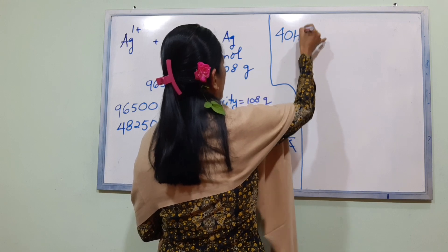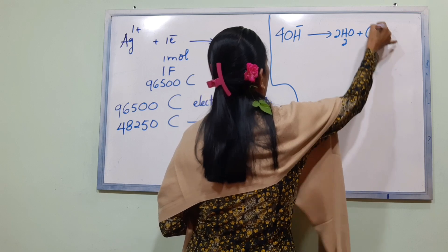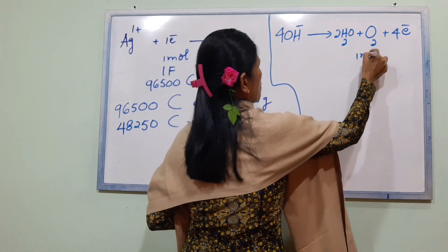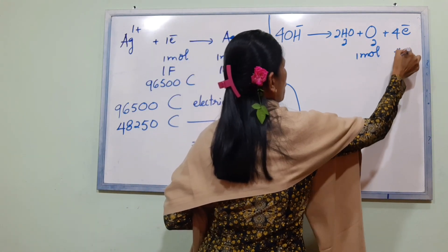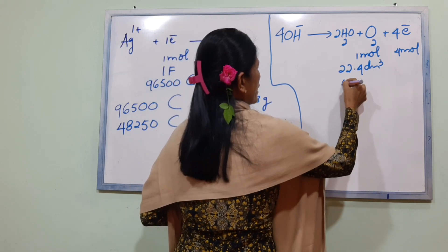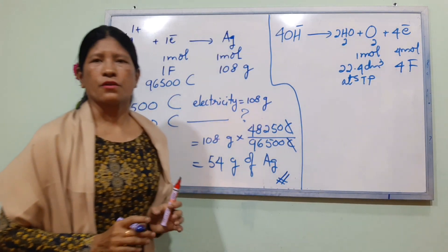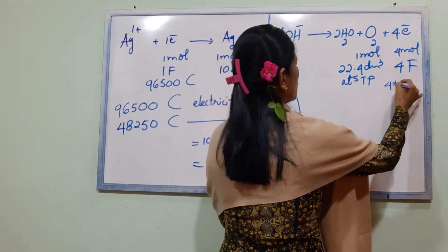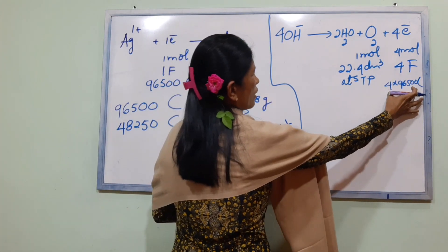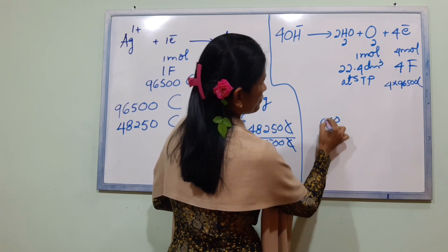For oxygen, the equation is: 4OH⁻ → 2H₂O + O₂ + 4 electrons. O₂ requires 4 electrons, meaning 4 Faradays. At STP, 1 mole of O₂ = 22.4 dm³. So 4 Faradays = 4 × 96,500 = 386,000 coulombs produces 22.4 dm³.